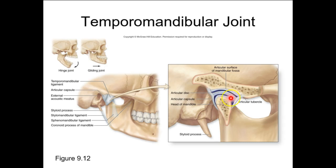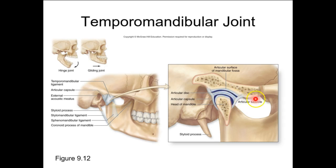The first thing it does is hinge, where that condylar process — the head of the mandible — articulates into the mandibular fossa of the temporal bone. It has an articular disc that is biconcave in shape. That head of the mandible takes that disc with it as it glides along the inferior surface of the temporal bone. It's a very complex movement and very prone to derangement, which was the point of that video.